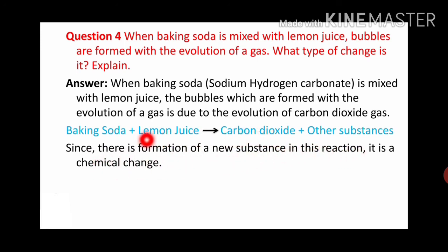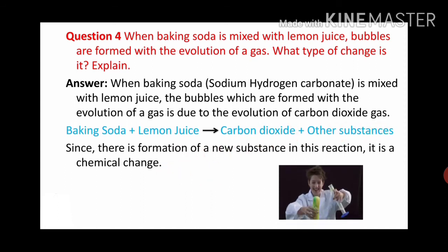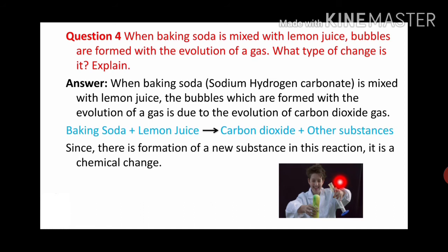Here, baking soda and lemon juice were mixed together. Their characteristics combined to form something new - a new substance is formed, that's why it is a chemical change. Here you can see the picture - a student has lemon juice, and baking soda is added to it. As soon as it is added, bubbles come out and the mixture overflows.